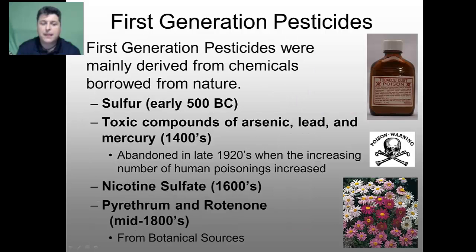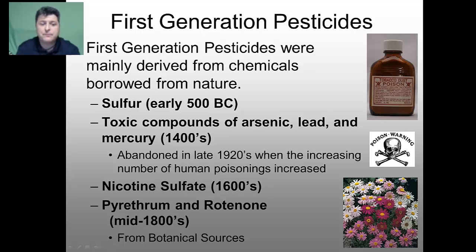Our first generation of pesticides were those derived from nature. Sulfur was used in the early 500 BCs to kill certain pest species. To kill rats and other rodents, toxic compounds of arsenic, lead and mercury were used in the 1400s, but abandoned in the early 1900s when an increasing number of human poisonings were occurring. Nicotine sulfate began to be used in the 1600s, derived from the tobacco plant, and is still used today as a very effective insecticide. Pyrethrum and rotenone were developed in the mid-1800s by extraction from particular plant species and are still used today due to their overall effectiveness.